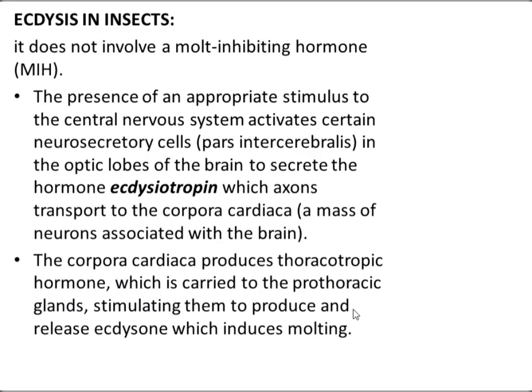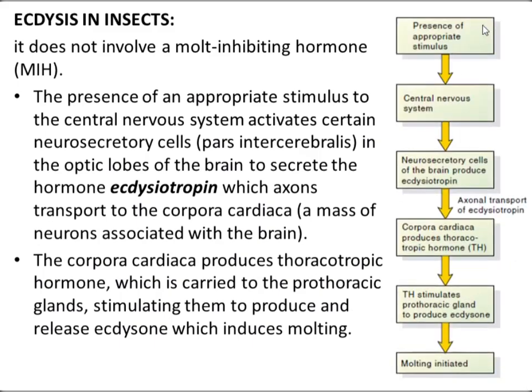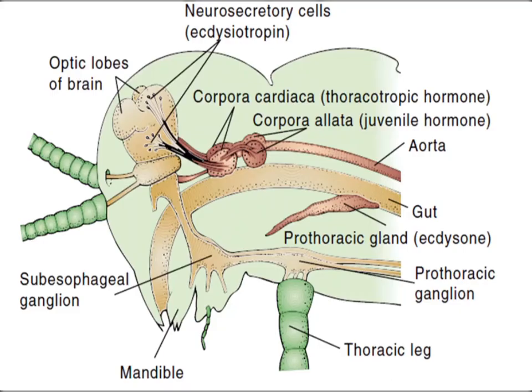Here is the flow sheet for insects: an appropriate stimulus causes neurosecretory cells of the brain to produce ecdysiotrophin, which travels to the corpora cardiaca via axonal transport. The corpora cardiaca produce the prothoracicotropic hormone (PTTH), which stimulates the prothoracic gland to produce ecdysone, causing molting in insects.